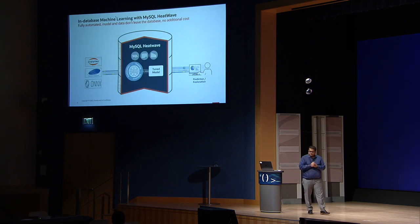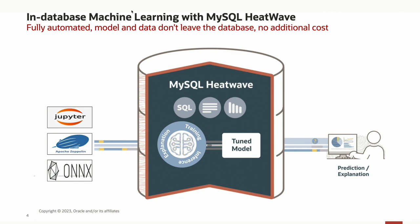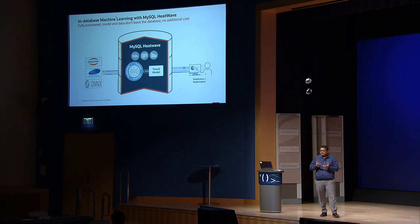So how do we solve this with HeatWave AutoML? HeatWave AutoML allows you to do in-database machine learning. It is fully automated. Neither the model nor any of your data ever leaves the database, and there is no additional cost to existing HeatWave customers. You have a single database where you can run OLTP, OLAP, and machine learning — everything on the same data. The data is up to date, there is no data migration, no data movement, no complex ETL tools.